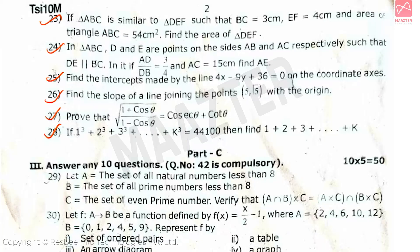If 1³ + 2³ + 3³ + ... + k³ = 44,100, then find 1 + 2 + 3 + ... + k. So, in this sum, first of all, we have to find the value of [k(k+1)/2]². Then find the value of k(k+1)/2. That will be the answer to this question.